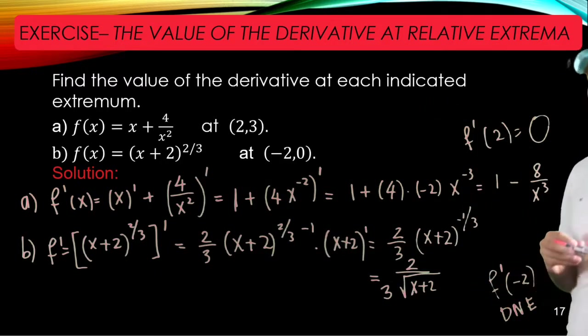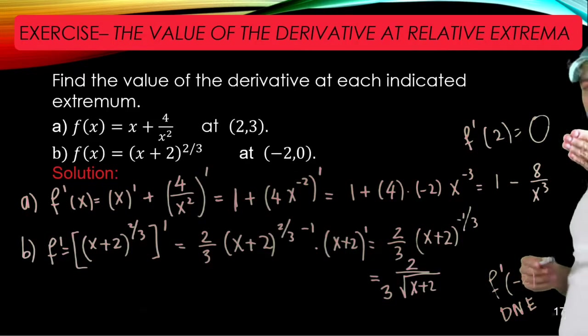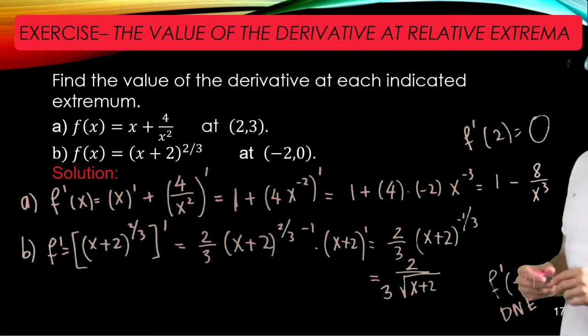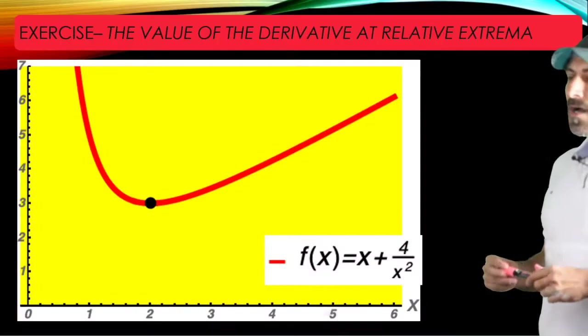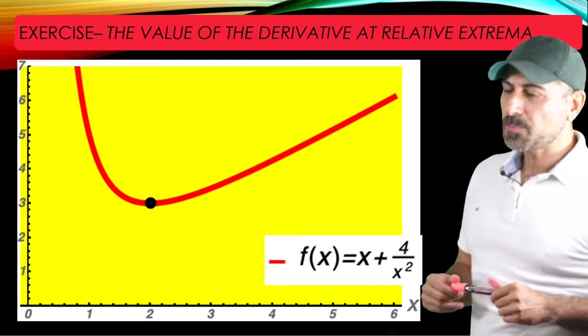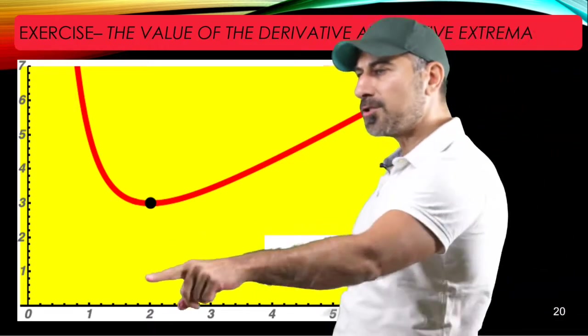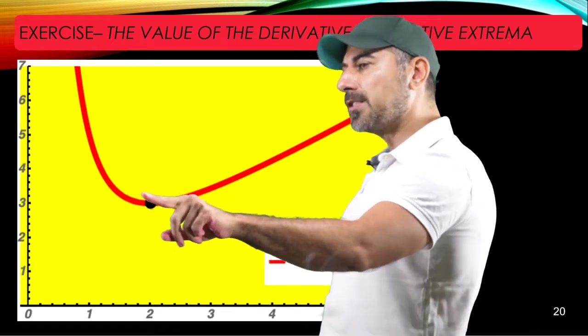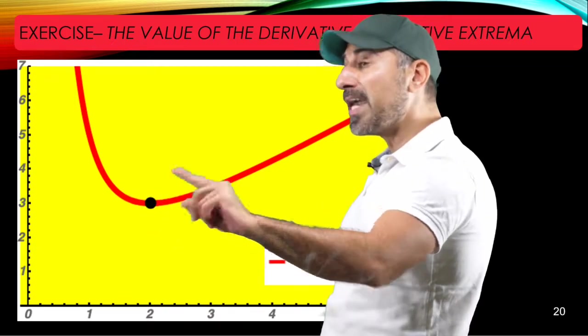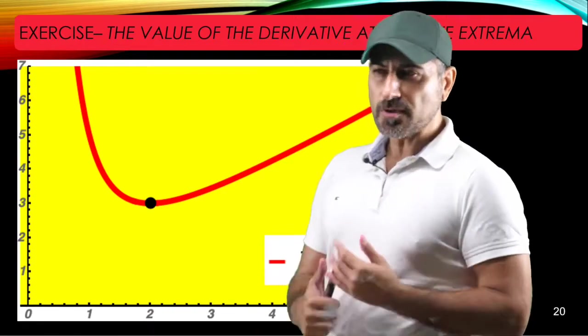Let's see how these results reflect in their graphs. If you look at the graph of the first function that was x plus 4 over x squared, as you see, the given point (2, 3) is the relative minimum point where f prime was 0.